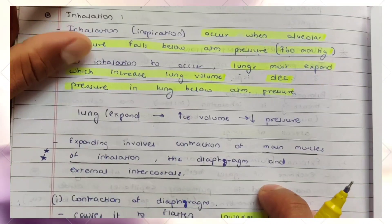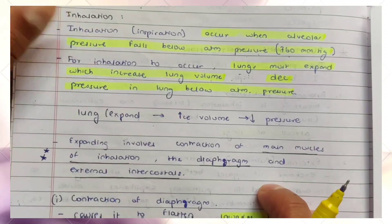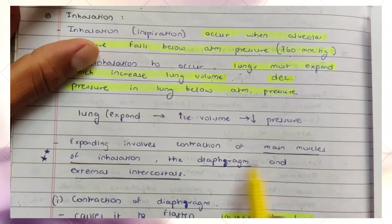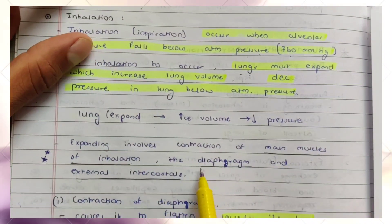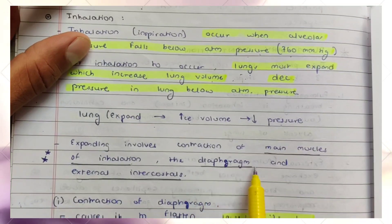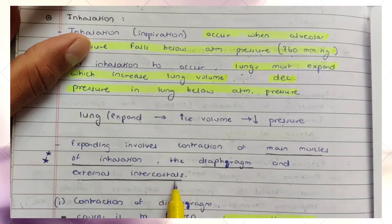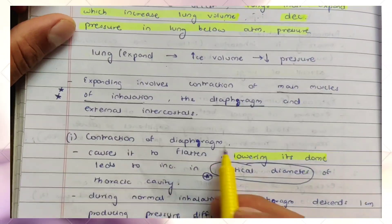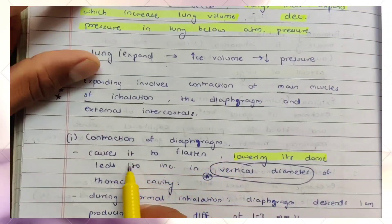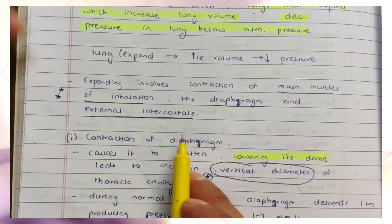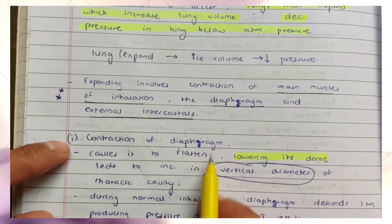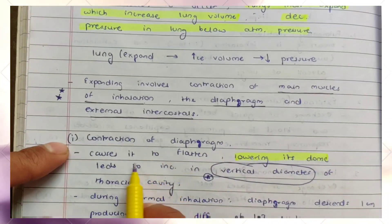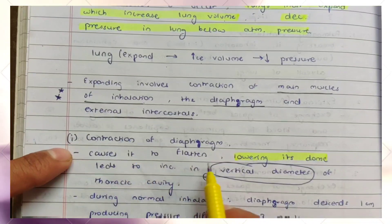Various muscles are involved in the physiological changes of inspiration. The main muscles of inhalation are the diaphragm and the external intercostal muscles. Contraction of the diaphragm causes it to flatten — its dome is lowered downward.